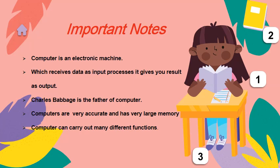Computers are very accurate and have very large memory. If you give correct data into the computer, then it will give you accurate results. Computer can carry out different functions at the same time. For example, we can listen to music and at the same time you can play games on a computer.